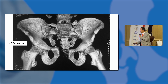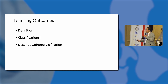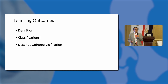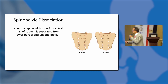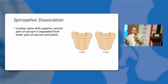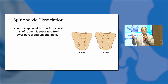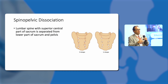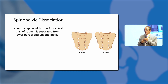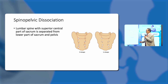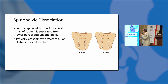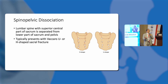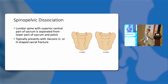By the end of this lecture, you will learn the definition of spinopelvic dissociation, the classifications, and how to describe spinopelvic fixation. Spinopelvic dissociation, by definition, means that the lumbar spine with the superior central part of the sacrum is completely separated from the lower part of the sacrum and the pelvis. Usually it presents like an H or a U — a Vaccaro H or U — which completely separates the pelvis from the spine.